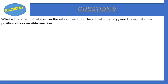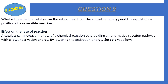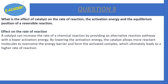Question number 9: What is the effect of catalysts on the rate of reaction, the activation energy, and equilibrium position of a reversible reaction? First of all, we will see the effect on the rate of reaction. A catalyst can increase the rate of chemical reaction by providing an alternative reaction pathway with lower activation energy.